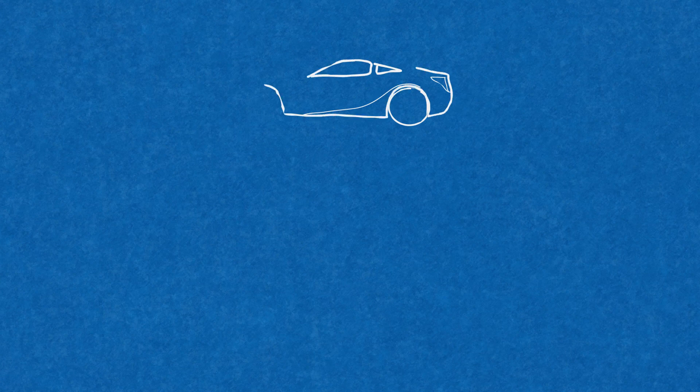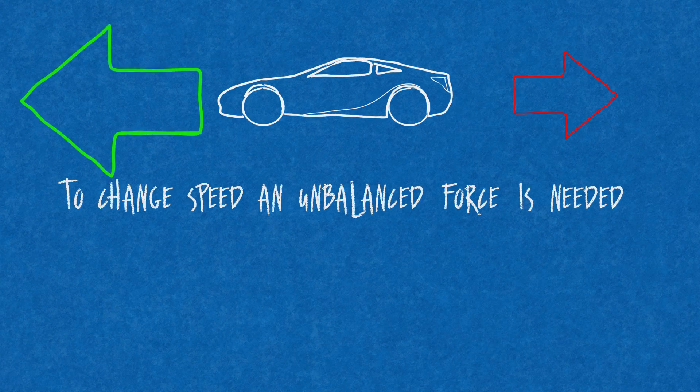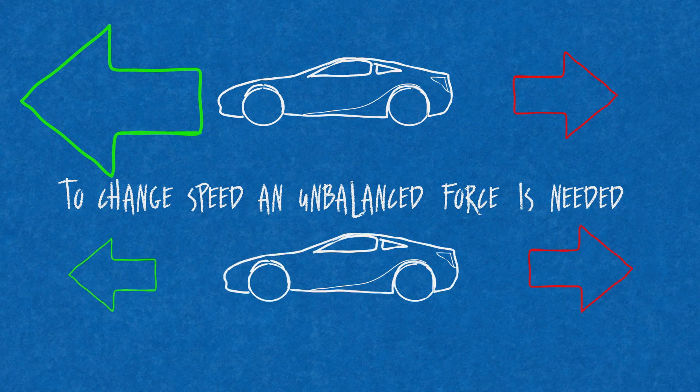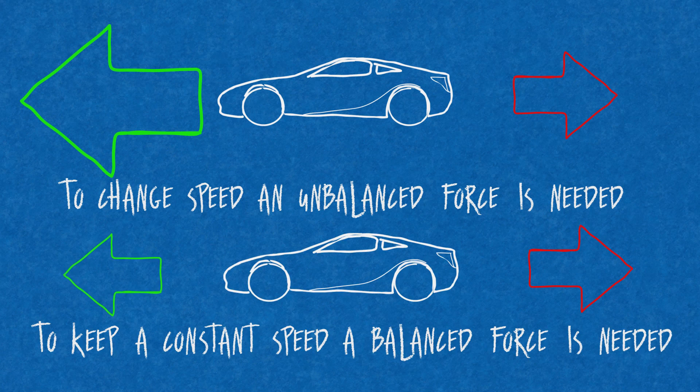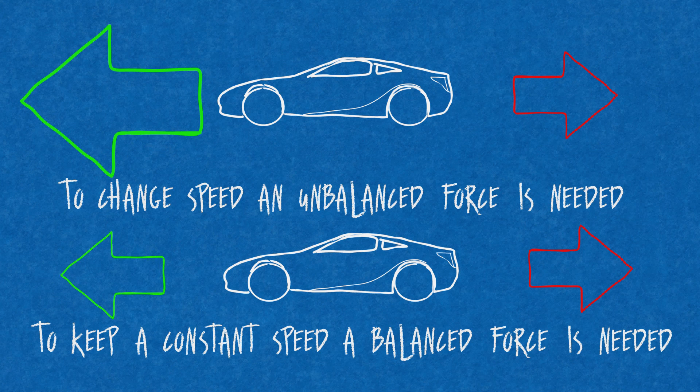So, for an object to change speed, there must be an unbalanced force acting upon it. For an object to remain at the same speed, a balanced force must be acting upon the object.